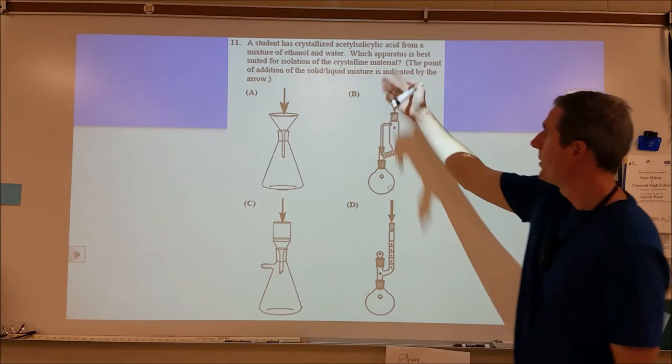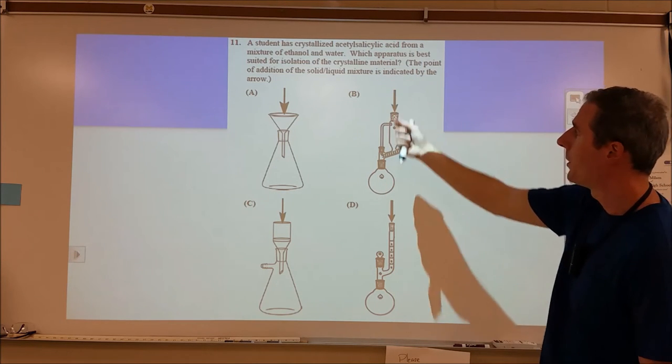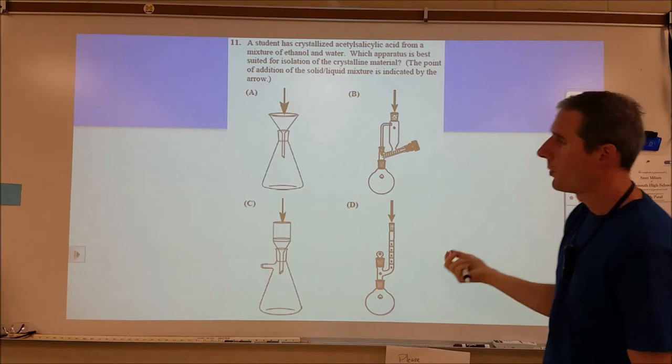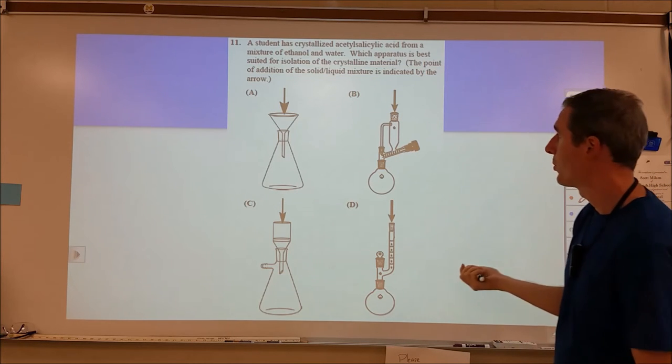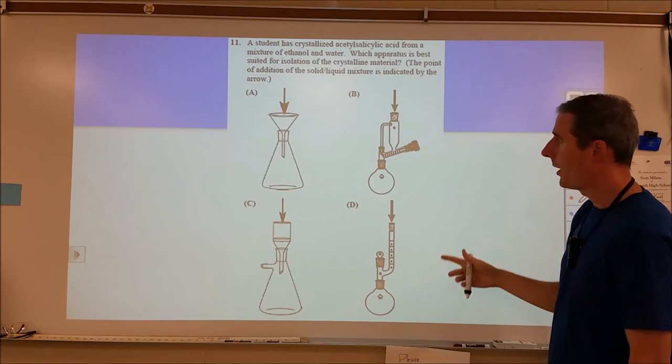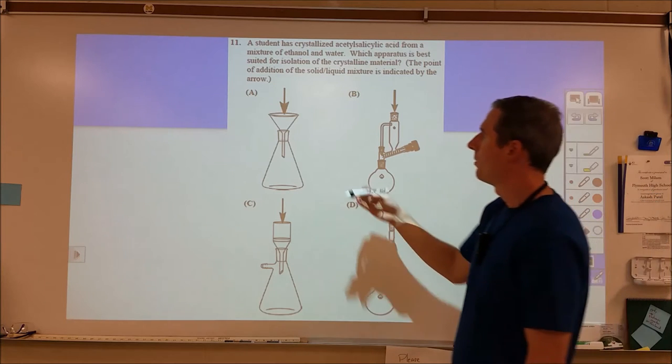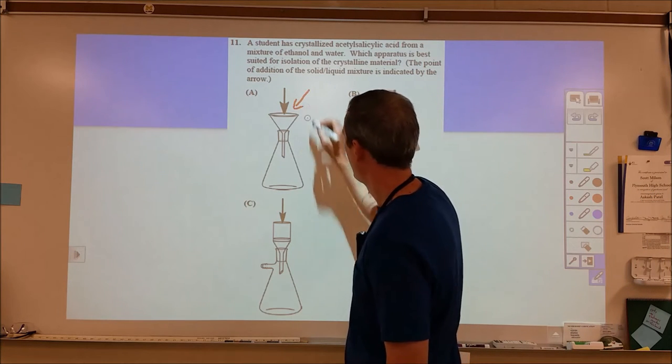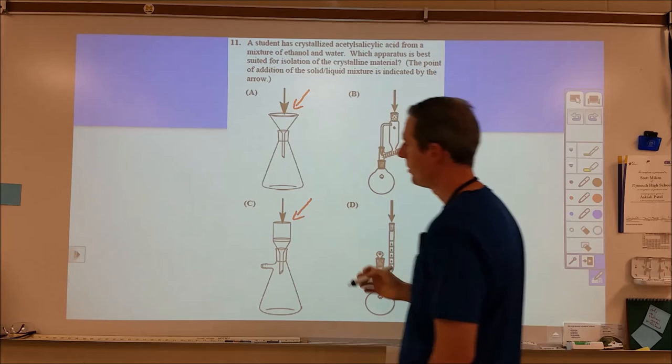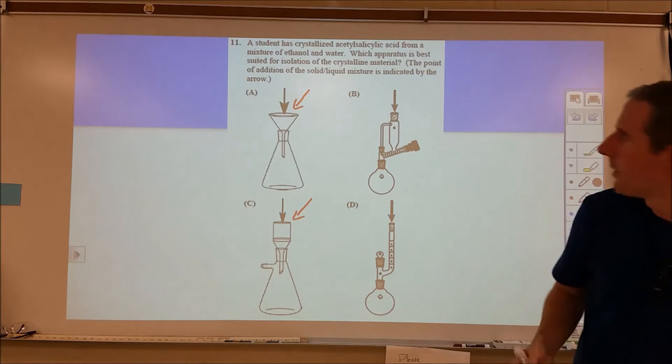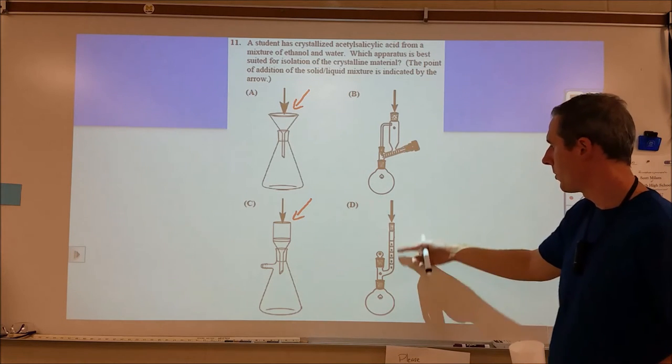Here in number 11, we're doing acetyl salicylic acid and we're doing a separation, so we have a precipitate, so we want to do a filtration. We have these four apparatus to choose from. I've done this experiment before. You can use A, you can use C.